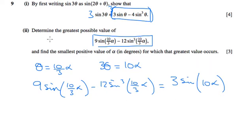So it then says determine the greatest possible value of this. So rather than determining the greatest possible value of this, I can just determine the greatest possible value of this.